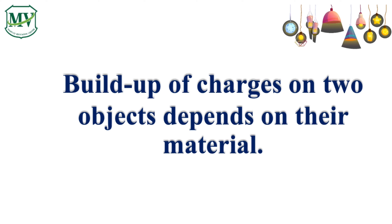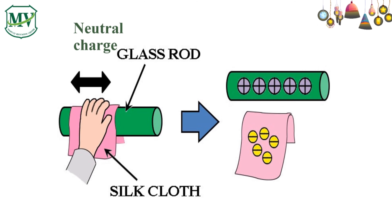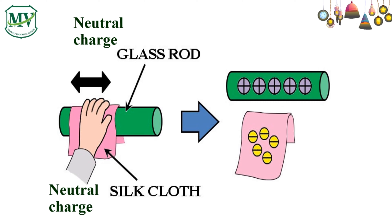The buildup of charges on two objects depends on their materials. Let us look at this example. The glass rod has a neutral charge, meaning the number of electrons and protons are equal. The silk cloth has a neutral charge also. Now, when the silk cloth is rubbed to the glass rod, there is static electricity — meaning there is a building up of charges. The negative charges of the glass rod move into the silk cloth, making the silk cloth negatively charged. Why? Because it now has more electrons.